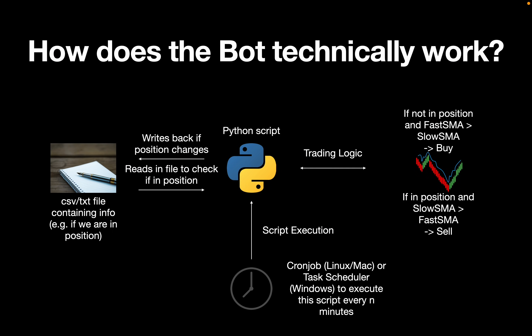Let me explain how this bot will work. We are setting up a CSV file containing the coins we want to trade and whether we are in a position. This CSV file will always change when we are either buying or selling the asset. The Python file reads in this CSV file, pulls price data from the Binance API, and implements the trading logic.